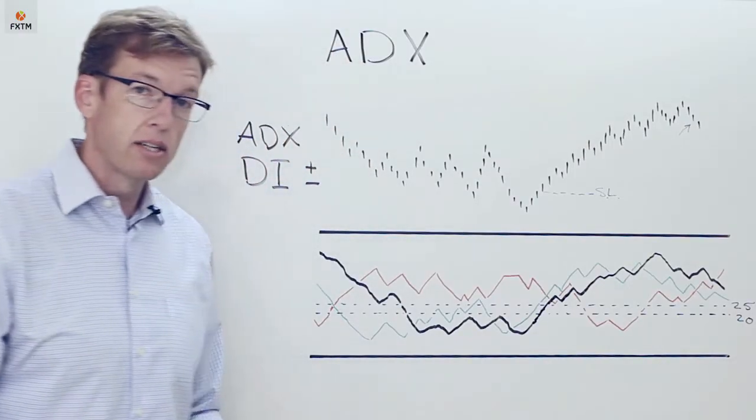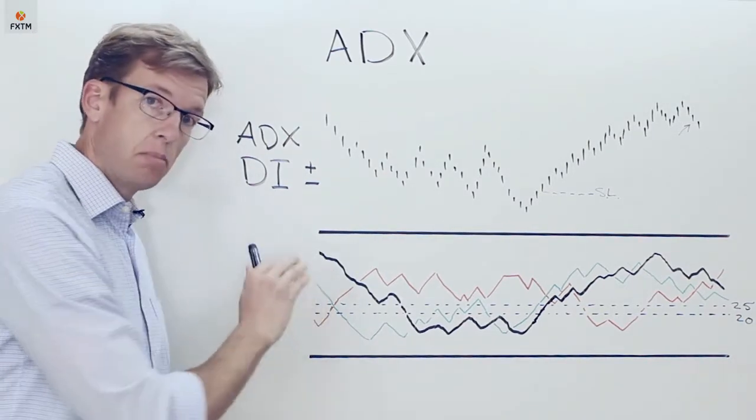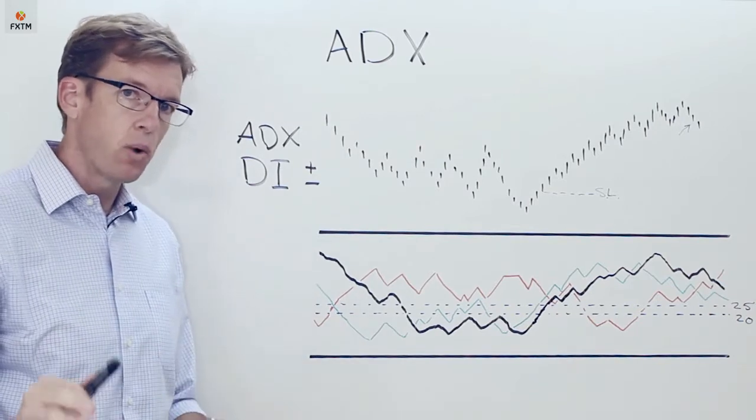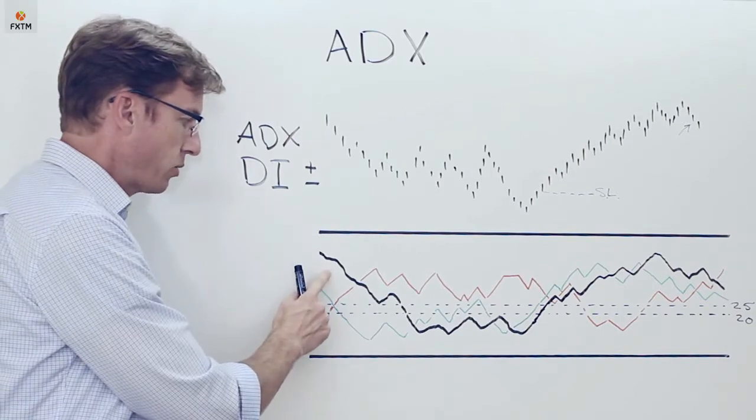Now a selling signal is actually very similar. So once again, remember, we're looking for a time when the ADX line, the black line, is still above 25, so indicating that we're in a strong trend. So I have such a scenario right here on the left-hand side of my chart.